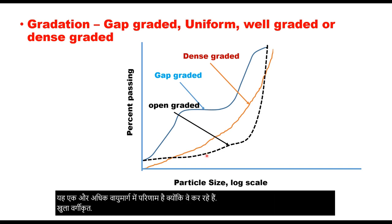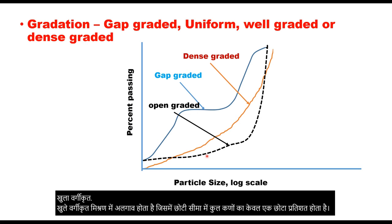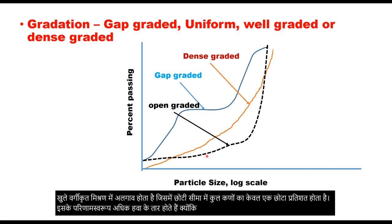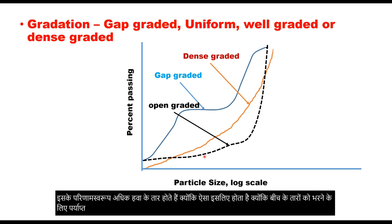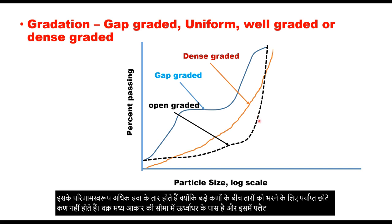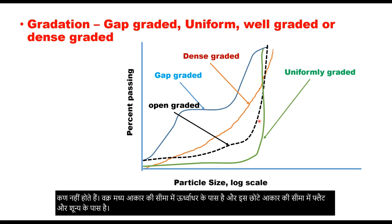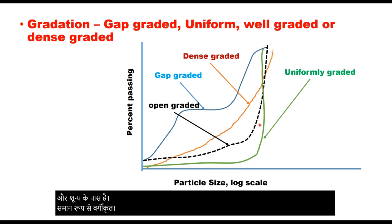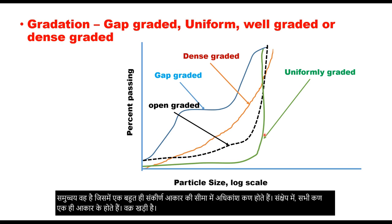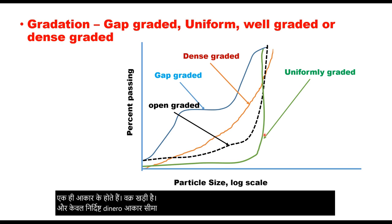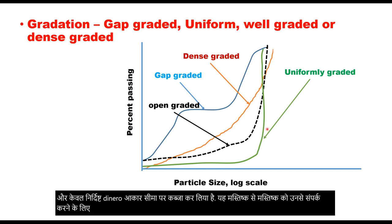Open graded mix contains only a small percentage of aggregate particles in the small size range. This results in more air voids because there are not enough small particles to fill in the voids between the large particles. The curve is near vertical in the mid-size range and flat and near zero in the small size range. Uniformly graded aggregate contains most of the particles in a very narrow size range — in essence, all the particles are of the same size. The curve is steep and only occupies the narrow size range specified. It provides grain-to-grain contact, high permeability and high void content, low stability, and is difficult to compact.